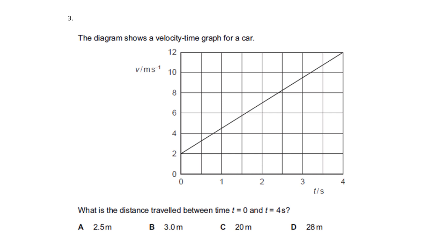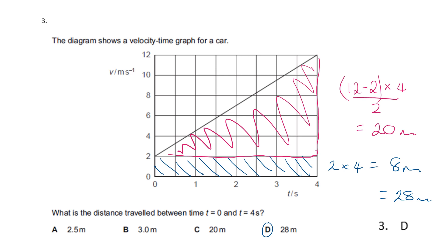Question three: the diagram shows a velocity-time graph for a car. What is the distance traveled between t equals zero and t equals four seconds? This is a case of finding the area under the graph line. We have a triangle shaded in pink, and the area is going to be 12 minus 2 — the height of the triangle, which is 10 — times 4, divided by 2. That gives 20 meters.